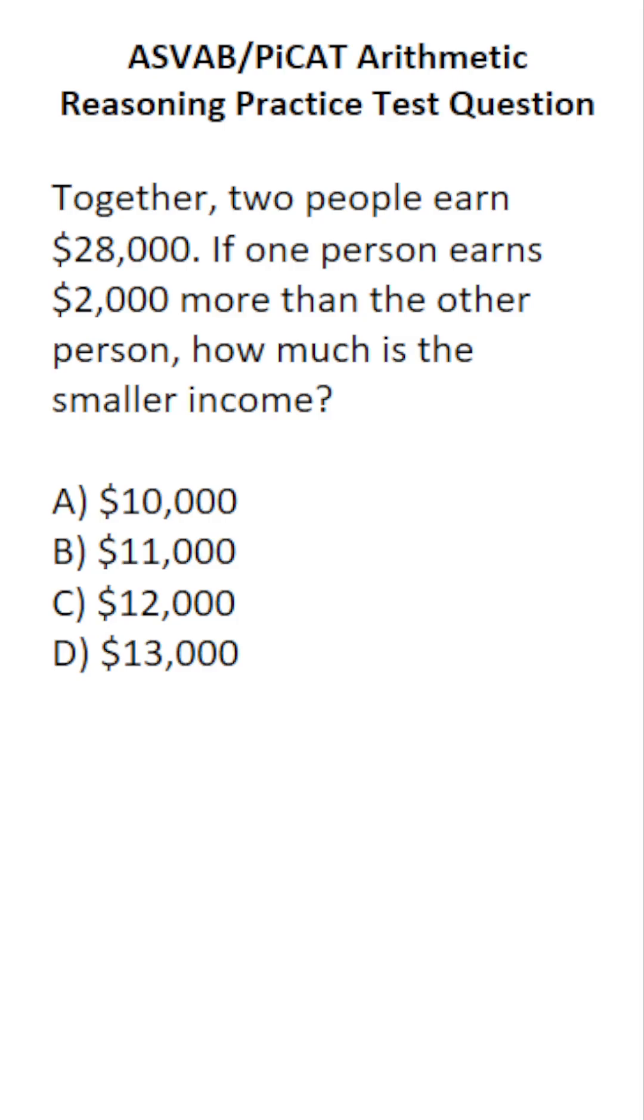We have to translate these statements into an equation that we can then solve. We don't know anything about how much either of these people make. So I'm going to say X represents one person's income, and then X plus $2,000 represents the other person's income.